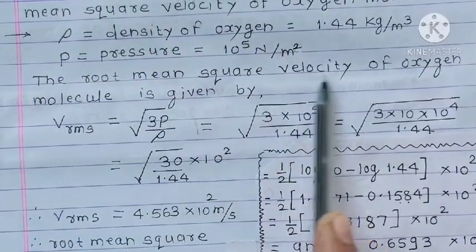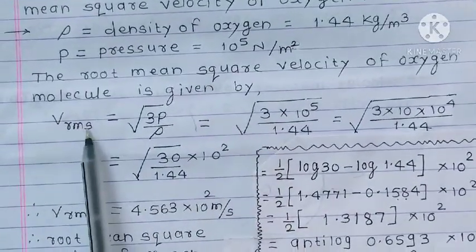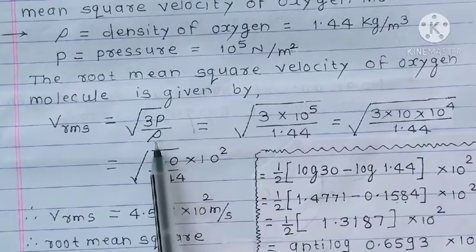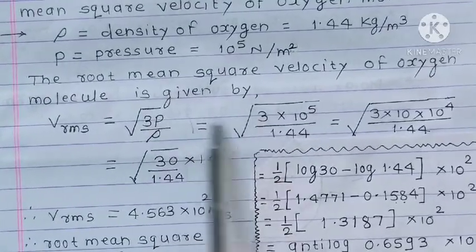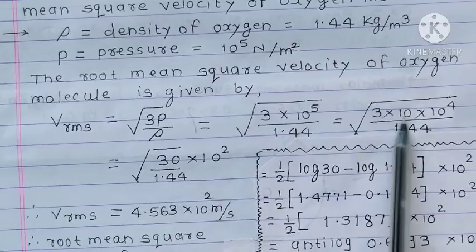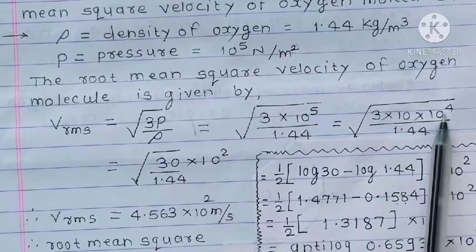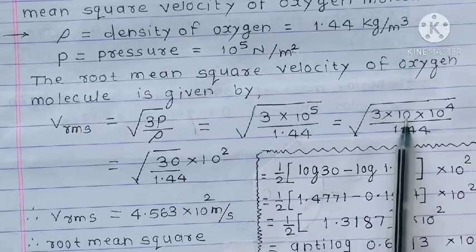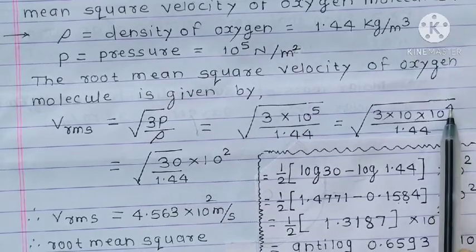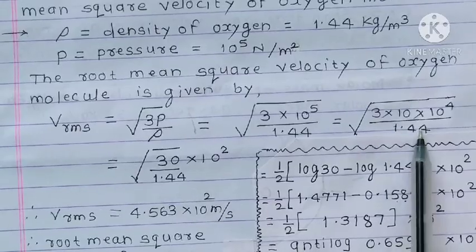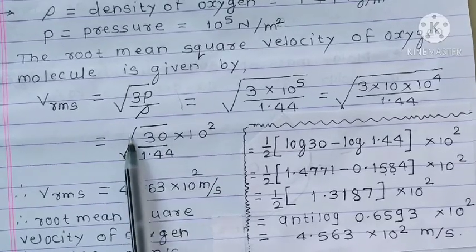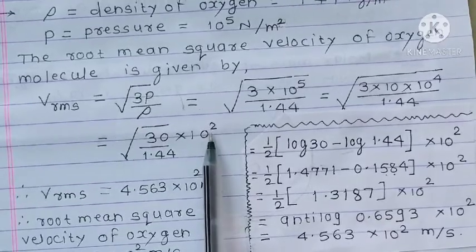The root mean square velocity of oxygen molecule is given by Vrms equals under root 3P upon rho. So 3P is 10 raise to 5, rho is 1.44. We can take 10 raise to 5 as 10 into 10 raise to 4 as a factor. So 3 into 10 that is 30, and if this is the root, then 10 raise to 2 upon 1.44.